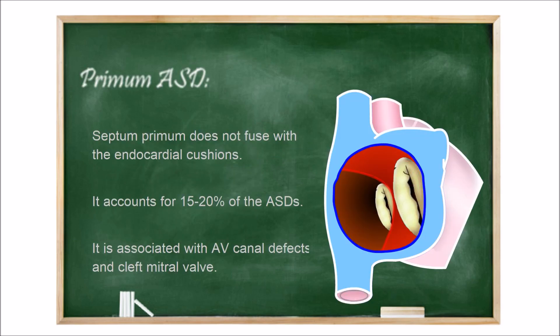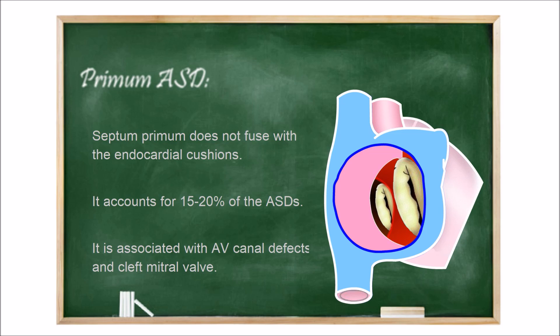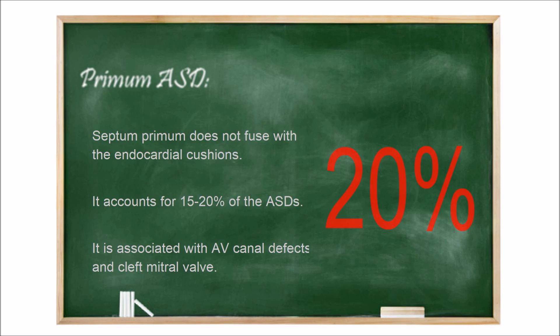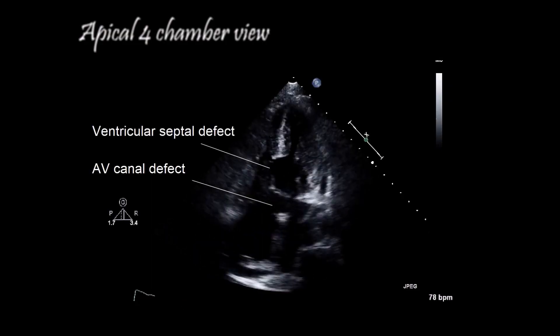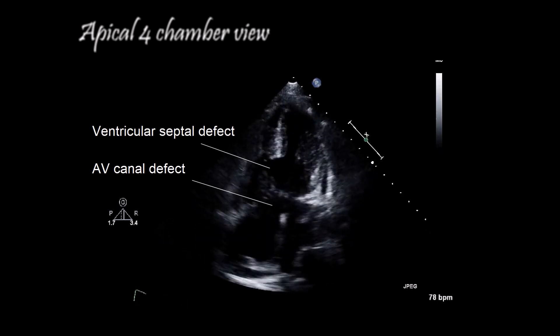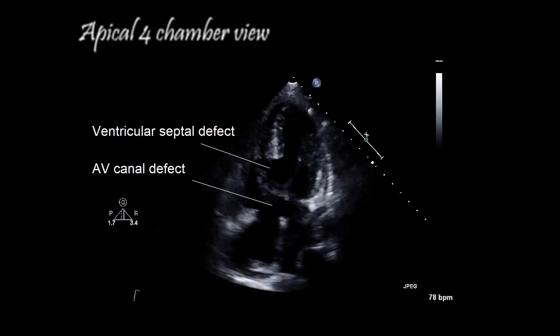It is now easy to comprehend how the atrial septal defects develop. Primum atrial septal defects develop when the septum primum does not fuse with the endocardial cushions, leaving a defect at the base of the interatrial septum that is not covered by the septum secundum. This type accounts for 15 to 20% of atrial septal defects, and they are usually not isolated, typically being associated with atrioventricular canal defects that include anomalies of the atrioventricular valves and ventricular septal defects.